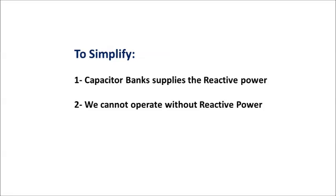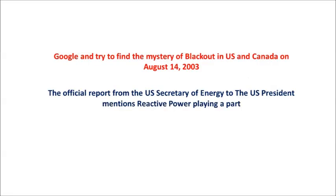Try to Google and find out the mystery of the blackout which happened in the US and Canada on August 14, 2003. The official report from the US Secretary of Energy to the US President mentions reactive power playing a part in it — reactive power was not managed properly, which resulted in the blackout. If you do not have reactive power in the system, anything which requires a magnetic field to operate will fail, because all this reactive power is used in generating the magnetizing current in components like motors and transformers. So you cannot eliminate reactive power from the system.